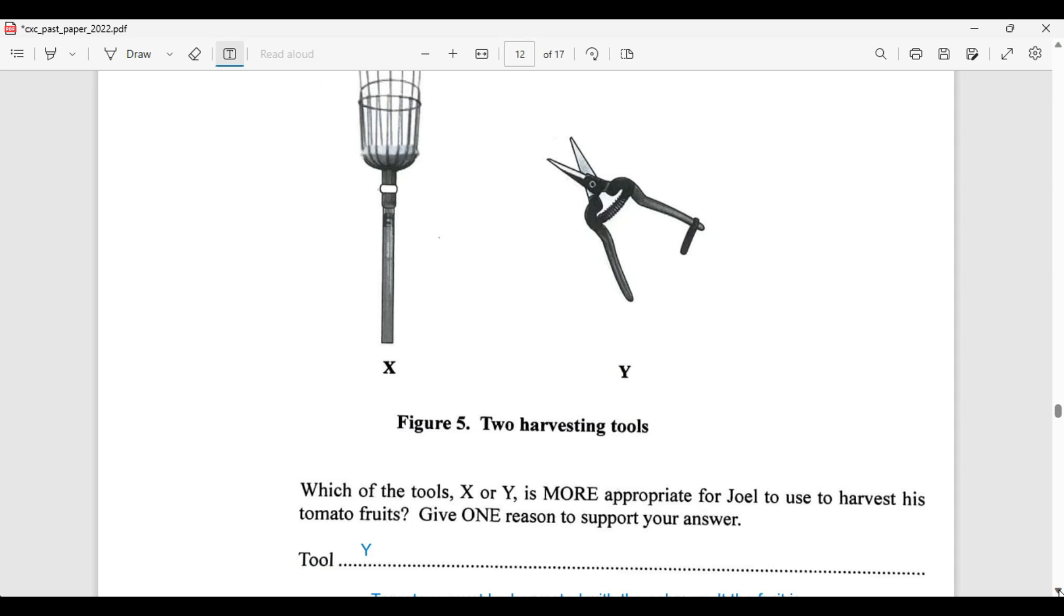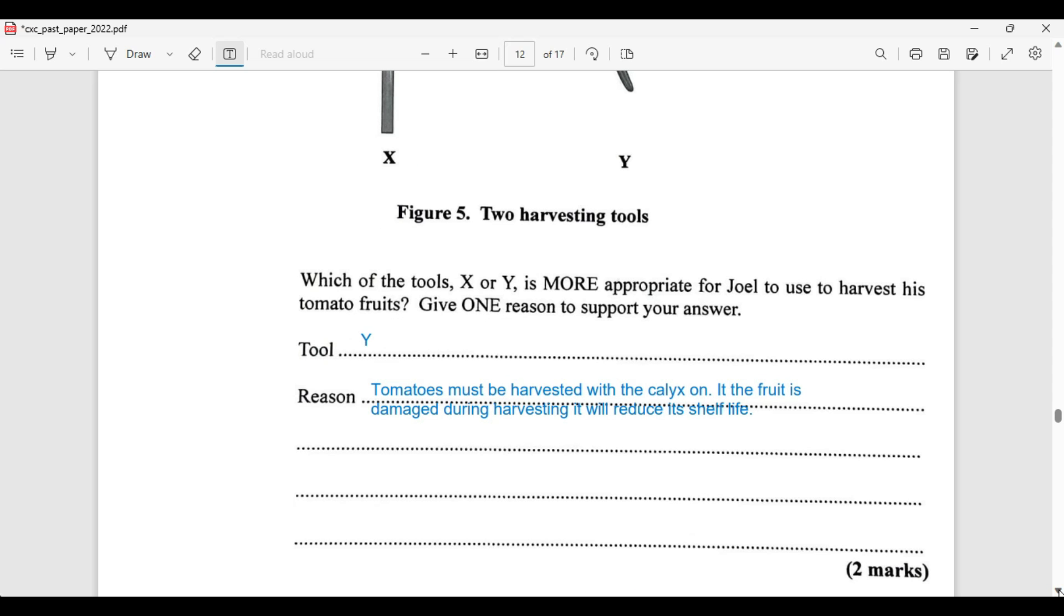So the tool there is going to be Y, the roll cutter. For the reason, tomatoes must be harvested with the calyx on. If the fruit is damaged during harvesting, it will reduce the shelf life of the fruit. We are using the roll cutter to do the harvesting so that the fruit is not damaged when the stem or the calyx are ripped off using the other device.